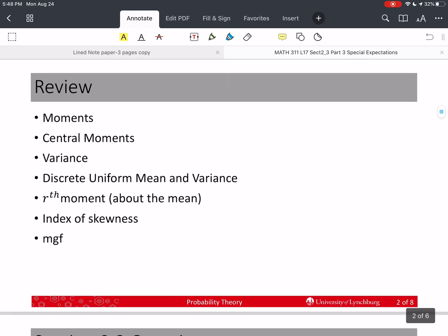In this section, we've already talked about moments, central moments, the variance, we've defined that. We talked about the mean and variance of the discrete uniform. Last time, we went over an r-th moment and an r-th moment about the mean. We discussed the index of skewness,